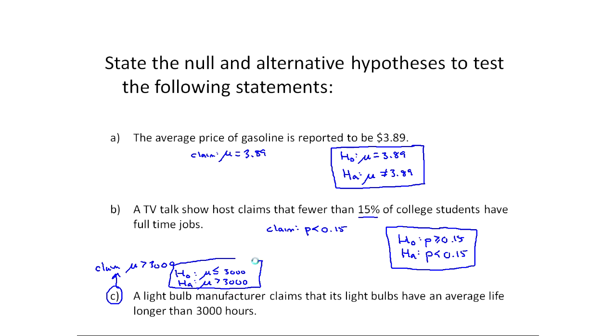Now we haven't even gotten into the procedure to test or anything like that, but the idea is we have to be able to set these up to test. Once we do decide to test, sometimes we'll have to pay attention to what tail this is. Here, HA is a not equal, so this is actually a two tailed test. Here we're less than, so this is a left tailed test. And here HA is a greater than, so this is a right tailed test.